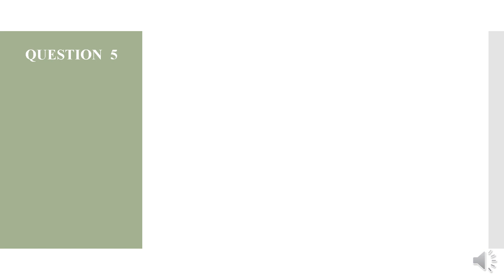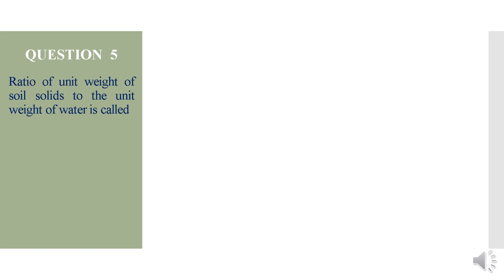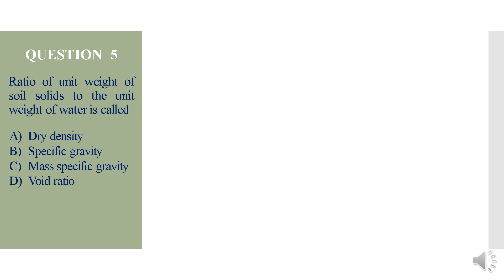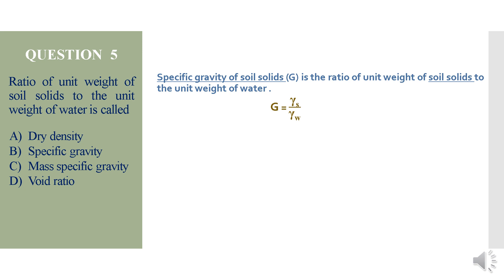Question 5: The ratio of unit weight of soil solids to the unit weight of water is called — options are dry density, specific gravity, mass specific gravity, or void ratio. Specific gravity of soil solids, represented by capital G, is the ratio of unit weight of soil solids to the unit weight of water: G = γs / γw, that is the unit weight of soil particles divided by unit weight of water.